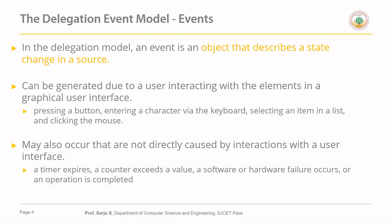Events are usually generated by user interaction, but they may also occur without direct user involvement. For example, a timer expiring might close a window, a counter reaching a certain value might trigger an action, a software or hardware failure can cause events, or a file copy operation completing might close a window.